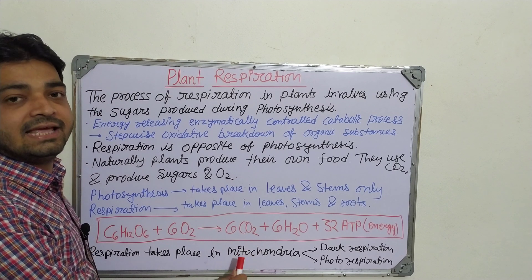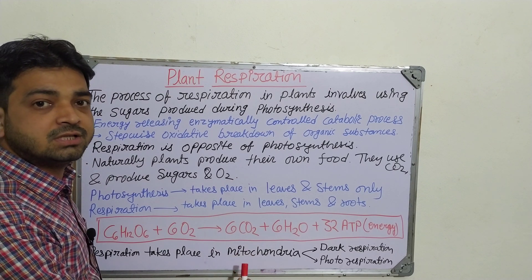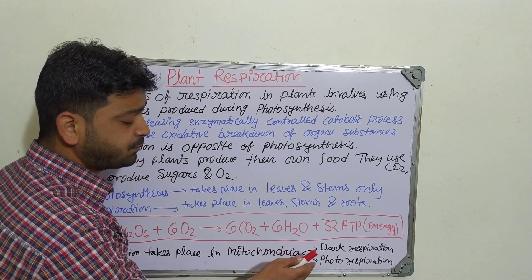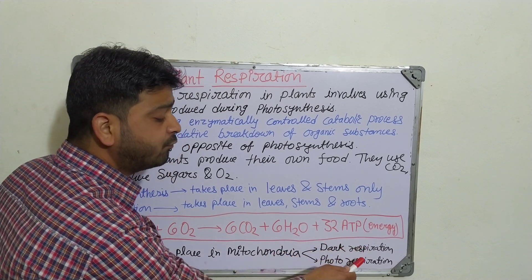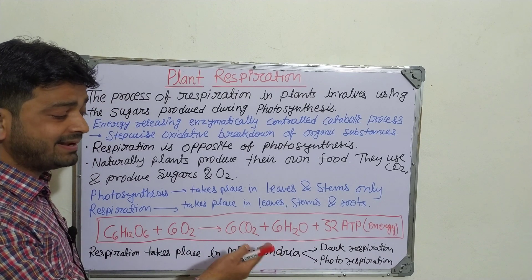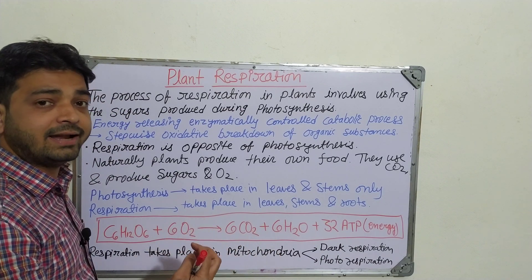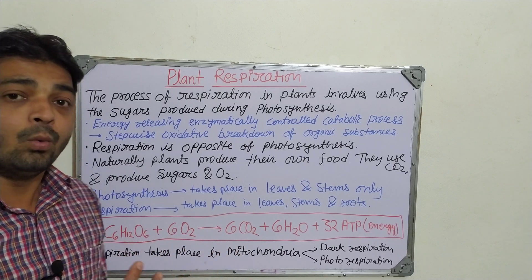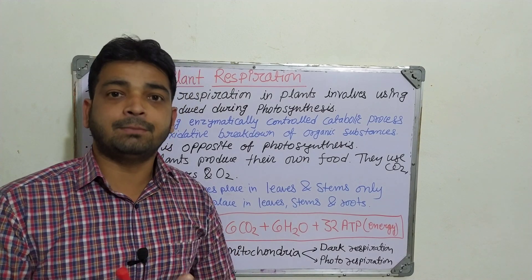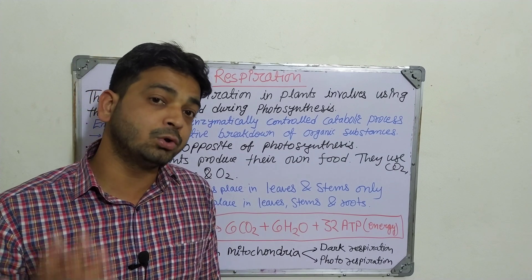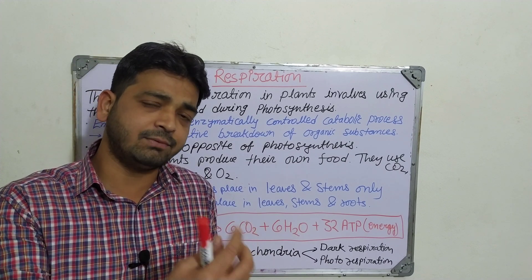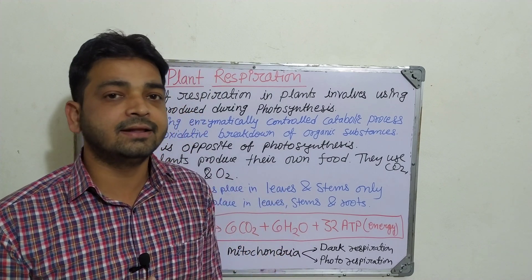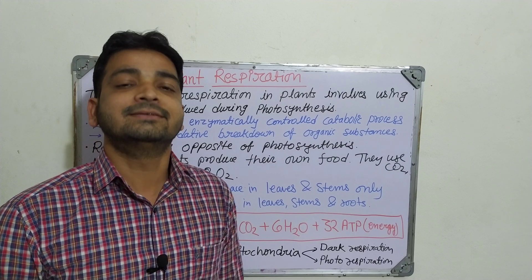Respiration takes place in the mitochondria of the cell — that's why the mitochondria is known as the powerhouse of the cell. There are two types of respiration possible in plants: dark respiration, which occurs without light, and photorespiration, which occurs with light. Both involve the metabolic breakdown of carbohydrates produced during photosynthesis to provide energy for normal growth and development.